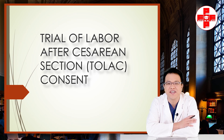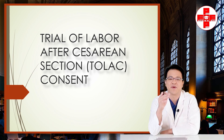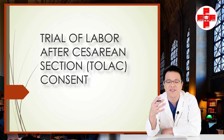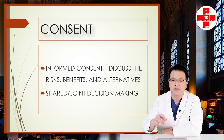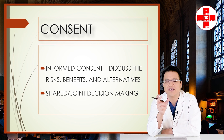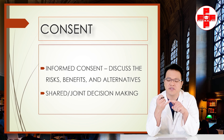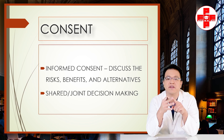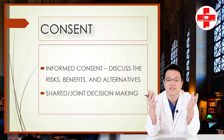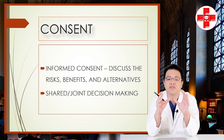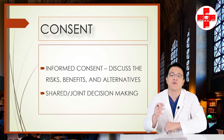Welcome to this episode of Patient Education for the Educated Patient. Today we're going to go line by line through an informed consent form for a trial of labor after C-section. The consent is an informed consent process where you discuss the risks, the benefits, and the alternatives to that procedure. ACOG has the stance that we should have a shared decision-making process, but ultimately patients get the say, in consultation with their obstetrician or provider.